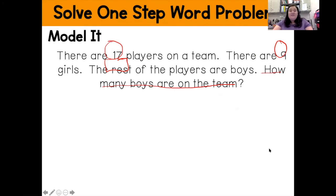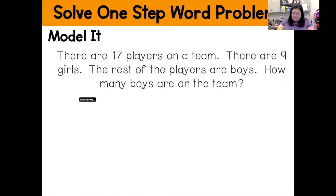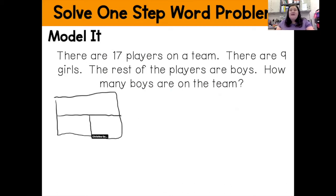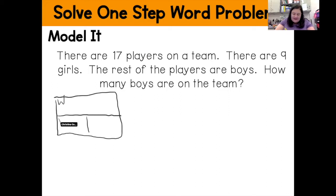Now I'm going to erase my workspace because I'm using the same word problem but a different strategy. This time I'm going to be using the model it strategy. I'm going to draw a bar model — a rectangle divided in half, and then the bottom half divided again, so it looks like I have three pieces. I'm going to reread the word problem and fill out the different parts of my bar model. This top part is going to be my whole or my total, and these two bottom parts are the parts.